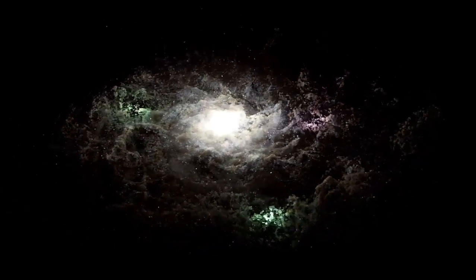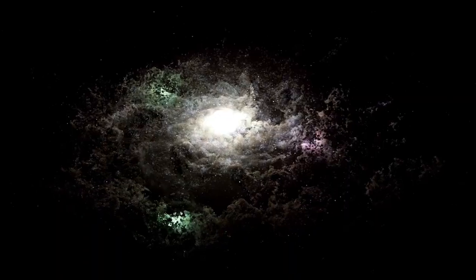The Sombrero Galaxy Messier 104, about 29.3 million light-years away, resembles a wide-brimmed Mexican hat with a diameter of 50,000 light-years and a prominent central bulge surrounded by a distinct dust disk.